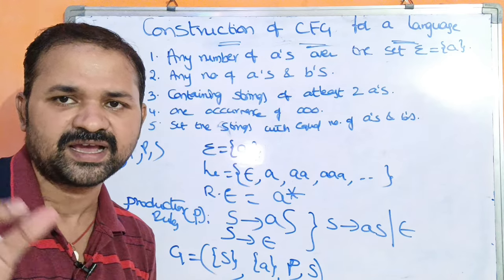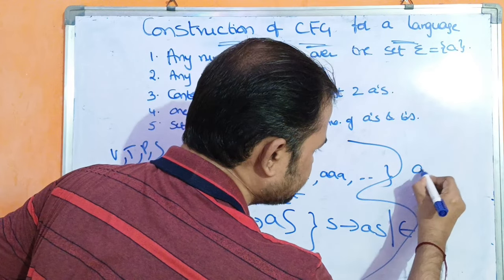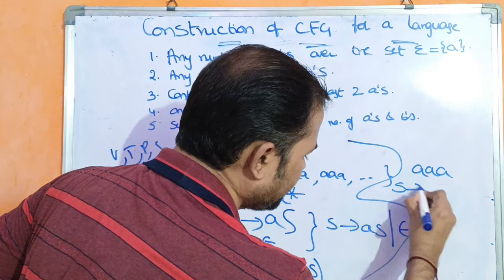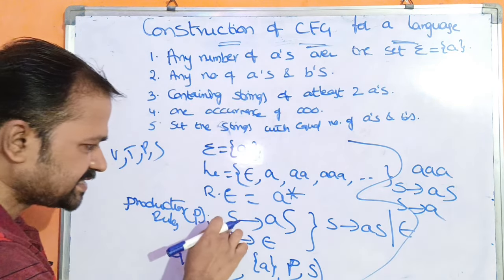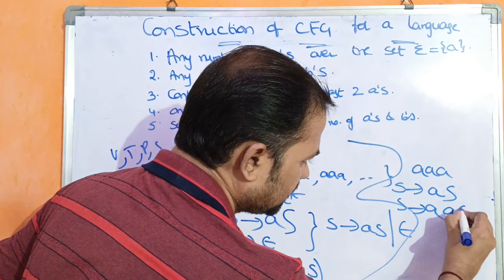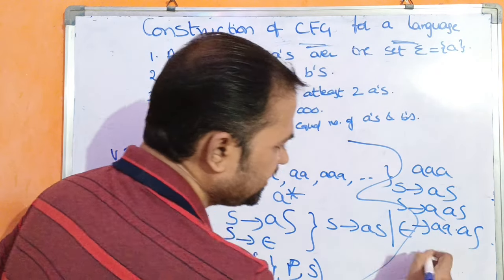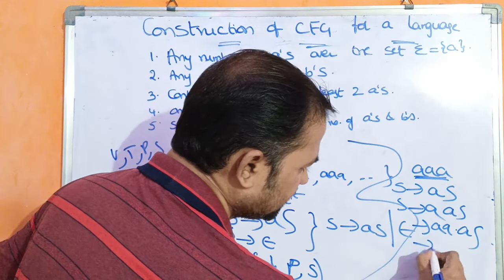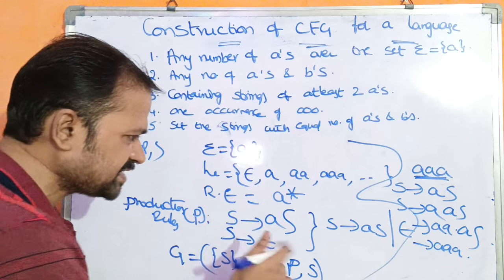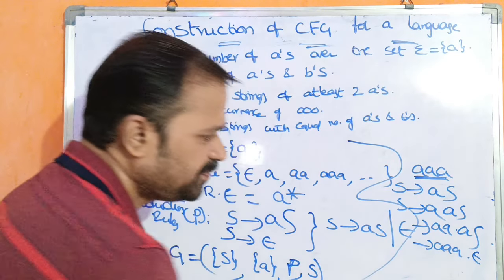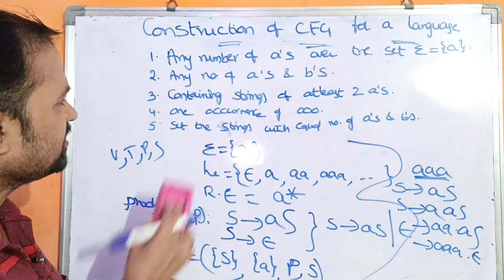Now let us check a string to verify correctness. The string is triple A (AAA). Starting symbol S produces A S. S means A S again, giving A A S. S means A S again, giving A A A S. In place of S, substitute epsilon, so A A A epsilon equals A A A. In this way we can construct the CFG for this language — any number of A's.